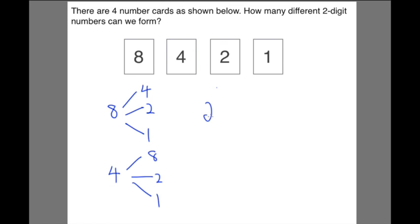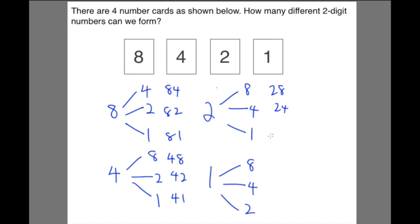Then you list down 2, then you list down the cards that you didn't use. 8, 4, 1. And you have 1 which is 8, 4, 2. So in actual fact, you can see that it's as good as writing down all the numbers, but you are actually eliminating any careless mistakes you might have. 28, 24, and this is 21, 18, 14, 12.